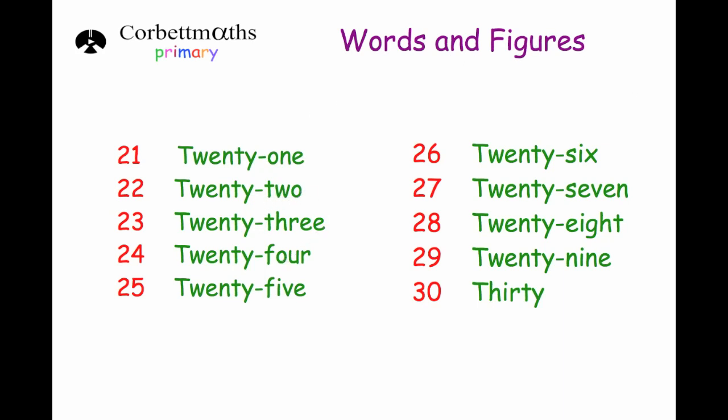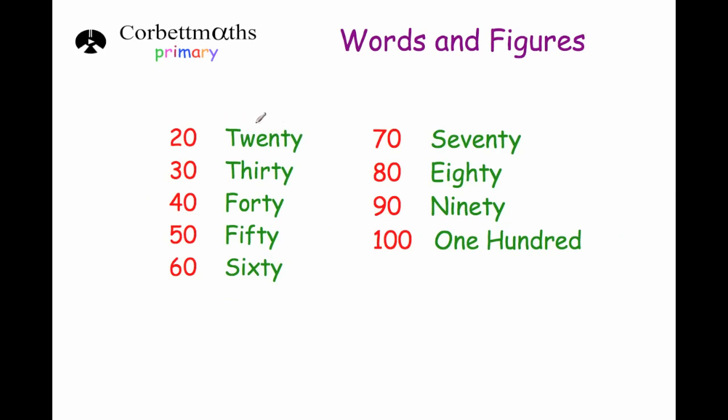That would repeat as well for thirty. So we'd go thirty-one, thirty-two, thirty-three, and so on. Forties, fifties, sixties, and so on. So if we look at the tens we've got: twenty, thirty, forty, fifty, sixty, seventy, eighty, ninety, and one hundred.